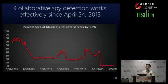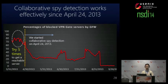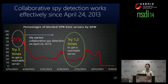Evaluation. Collaborative spy detection works effectively. Before we started this technique, a Chinese user had to try five times on average to get a reachable server. However, after we started this technique, the percentage of VPN Gate servers blocked by the Great Firewall significantly reduced, and a Chinese user needed to try only about one time to get a reachable server from China.